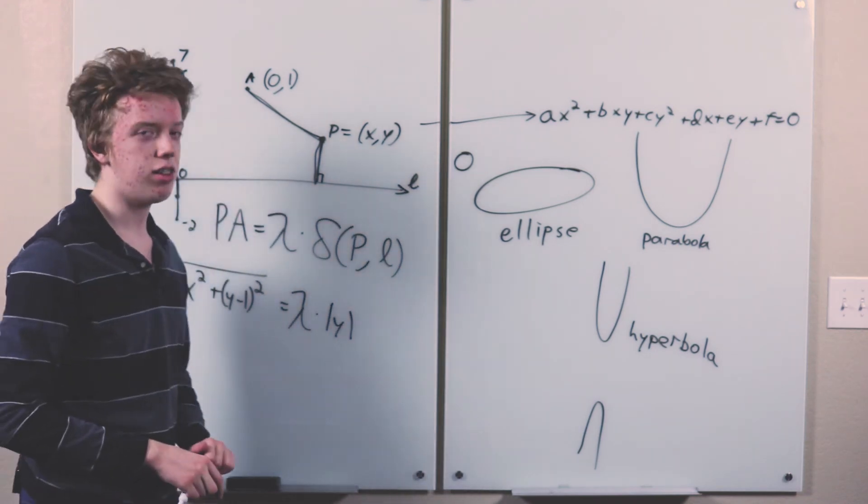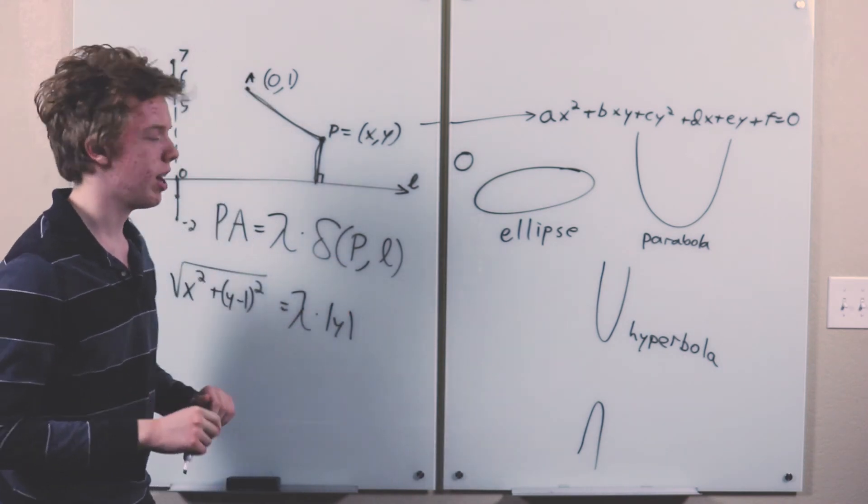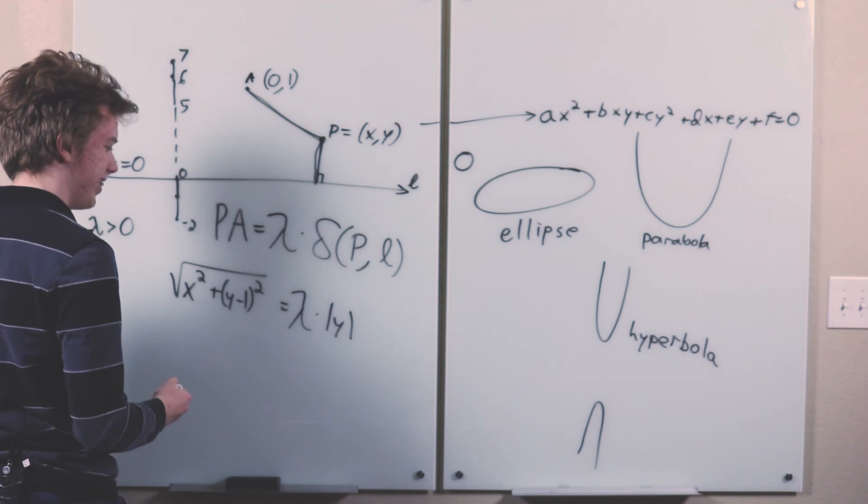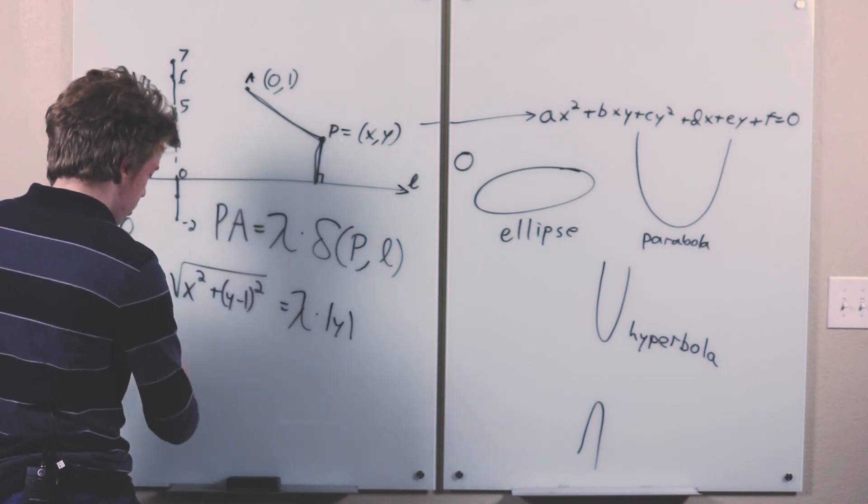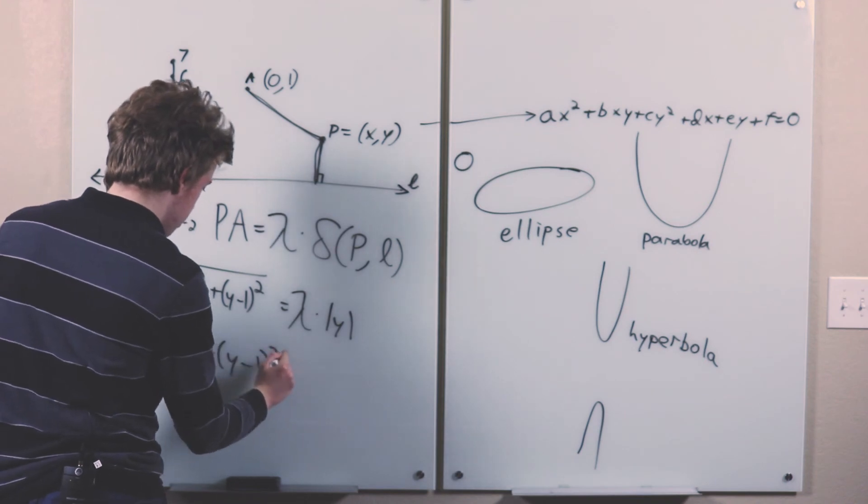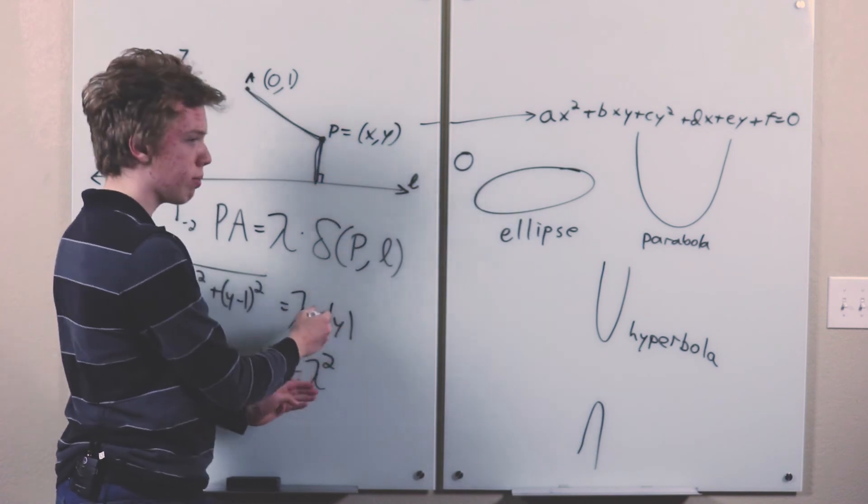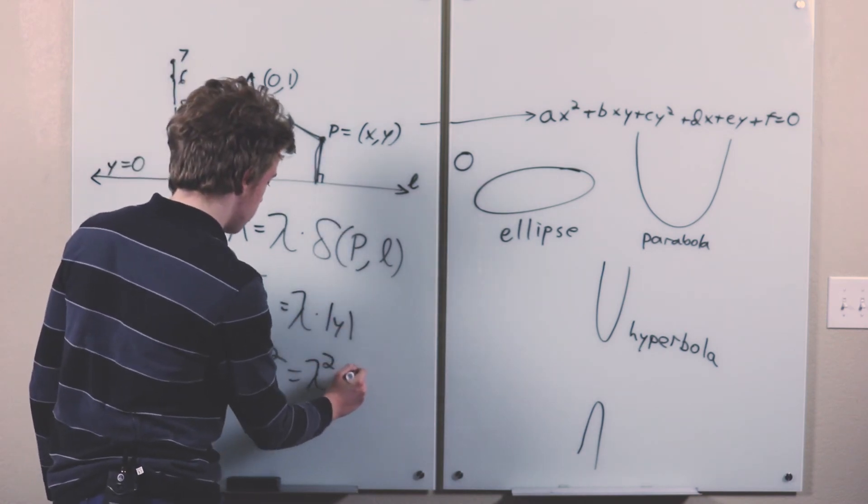I'll leave that as, as they all say, an exercise for the reader or the viewer in this case. So if we square both sides, you get this on the left-hand side, and then lambda squared is lambda squared, and then the square of the absolute value of y is just y squared.